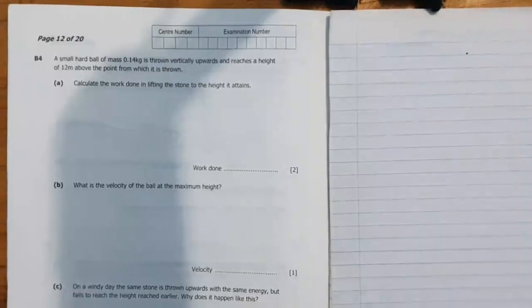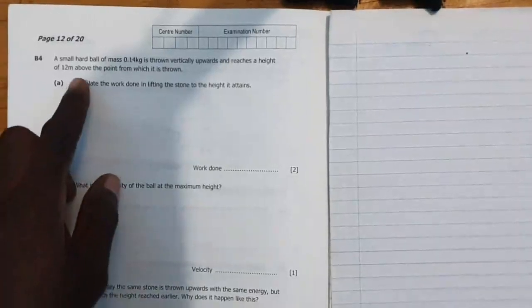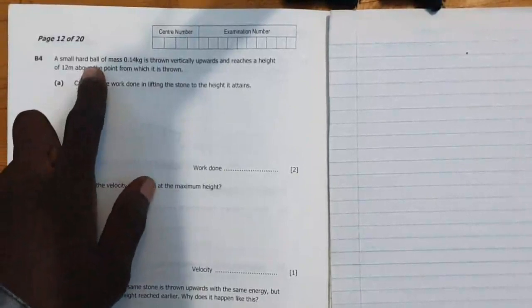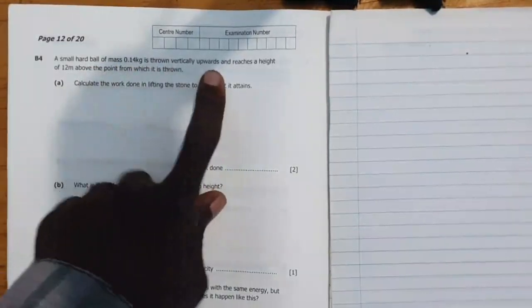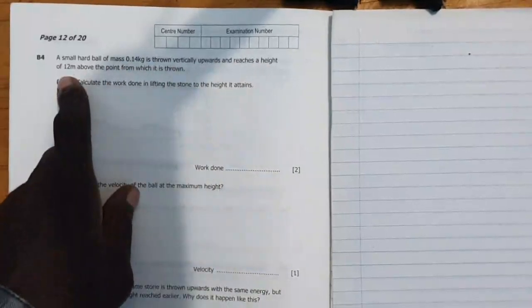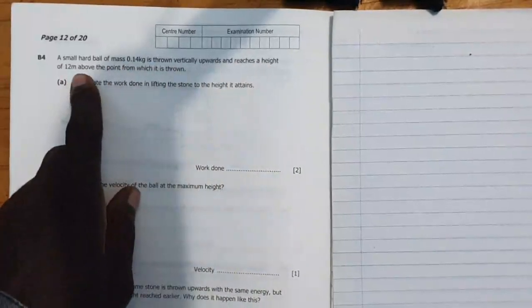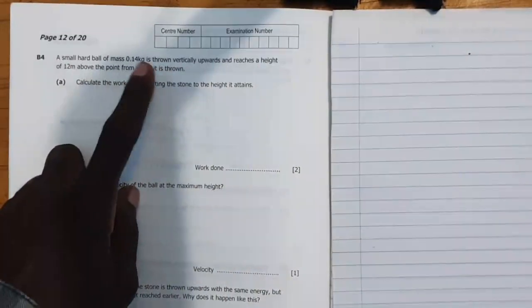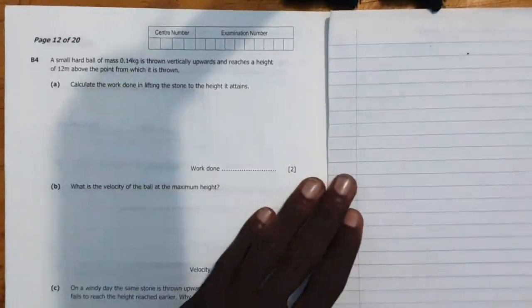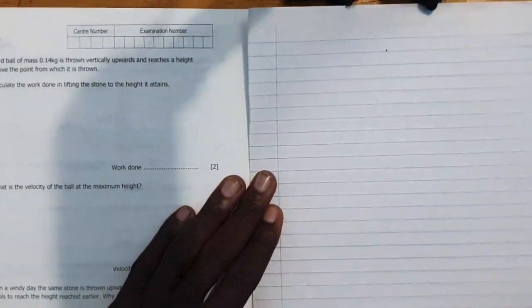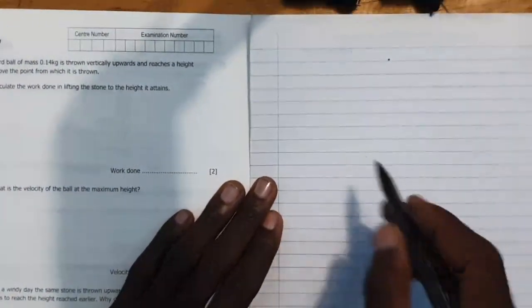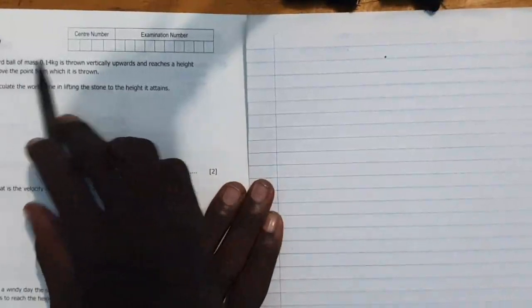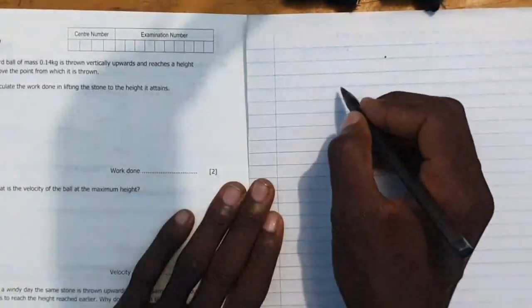Alright, we have this question which says a small hard ball of mass 0.1 kg is thrown vertically upwards and reaches a height of 12 meters above the point from which it was thrown. So let's just get into it. They are saying this ball is thrown vertically upwards and reaches the highest point.